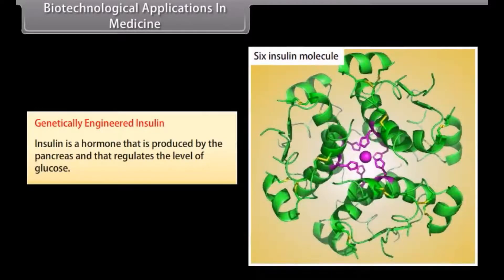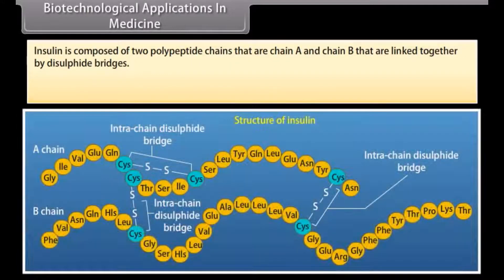Genetically engineered insulin: Insulin is a hormone produced by the pancreas that regulates the level of glucose. Insulin is composed of two polypeptide chains, chain A and chain B, that are linked together by disulphide bridges.